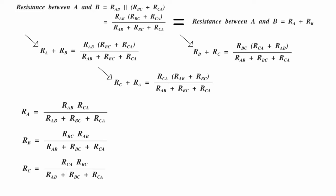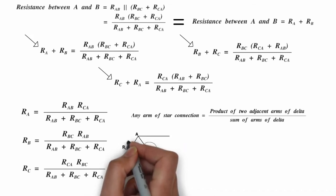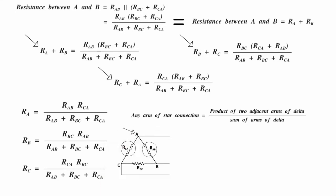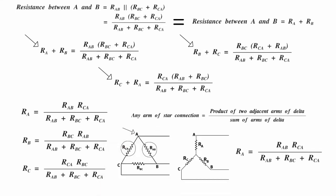We can simply say that any arm of star connection equals product of two adjacent arms of delta divided by sum of arms of delta. For example, here RAB and RCA are two adjacent arms for which common terminal is A, so we can say RA equals RAB into RCA divided by RAB plus RBC plus RCA. If you have any questions please comment below. Thanks for watching.